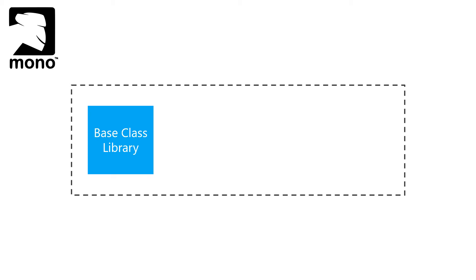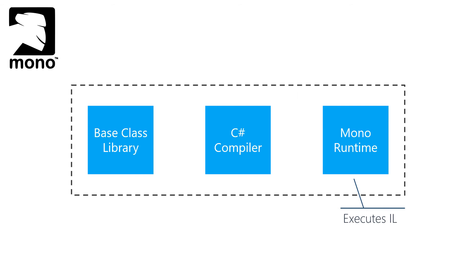For Xamarin Android developers, we get an additional set of Mono tools and libraries. The Mono project is an open source implementation of Microsoft's .NET framework and has the core pieces needed to build .NET applications. This includes the base class library, which contains familiar utility classes on the .NET side for things like string handling, networking, and data structures — and as C# developers we typically use these instead of the Java implementations provided with the Android SDK. It also includes the C# compiler and the Mono runtime execution engine.